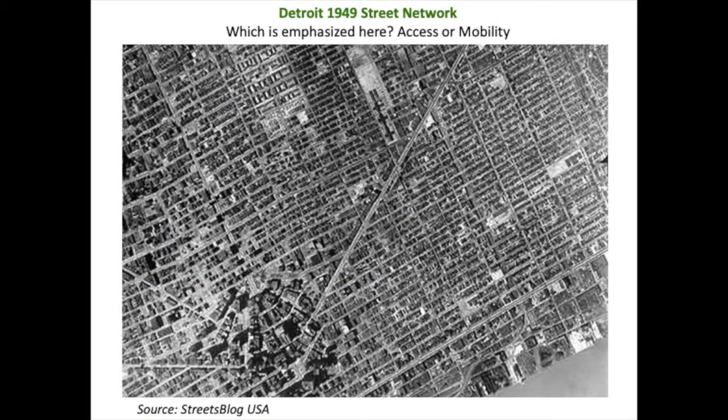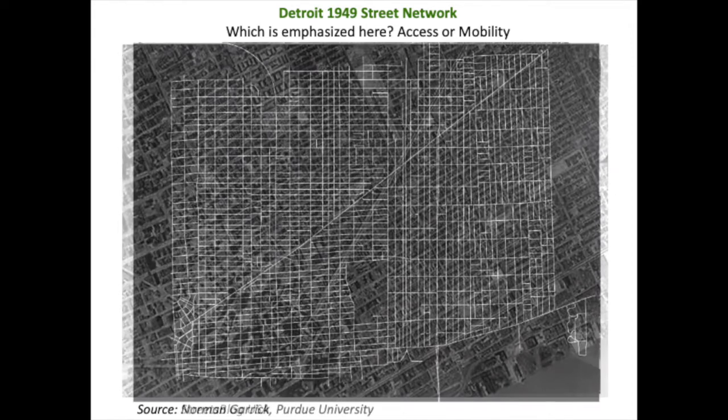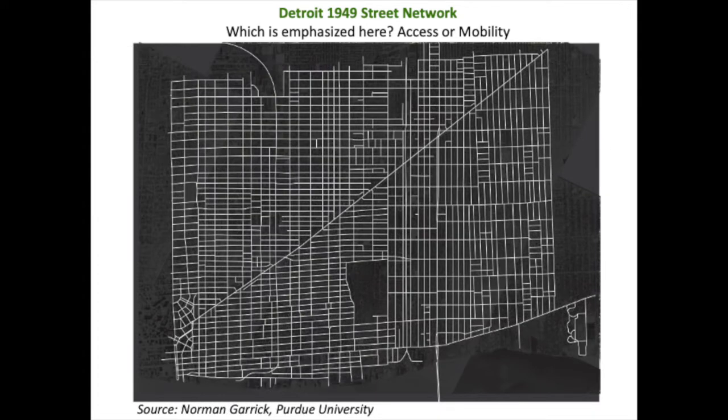Take for example the evolution of the street network in the U.S. city of Detroit. Here we see the street network as it existed in 1949 — you can probably guess just by looking at the street pattern whether it was designed to emphasize accessibility or mobility. The network is laid out predominantly in a grid pattern; streets are local connectors with a few minor or major arterials.